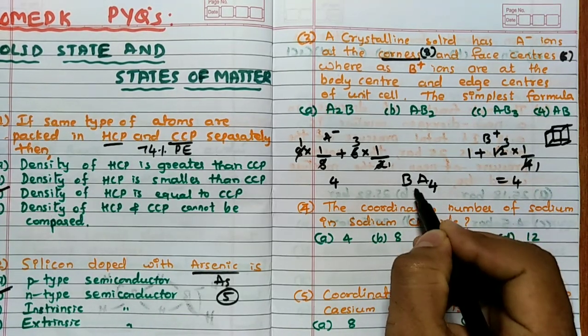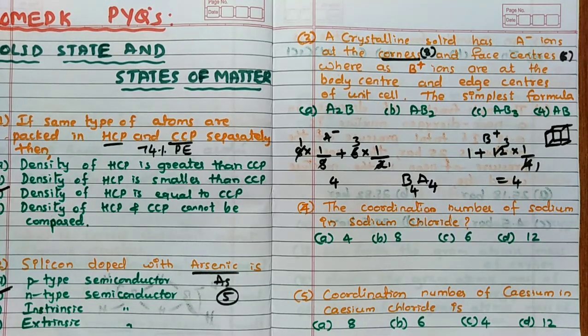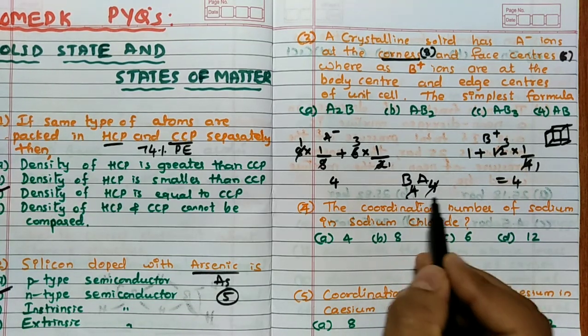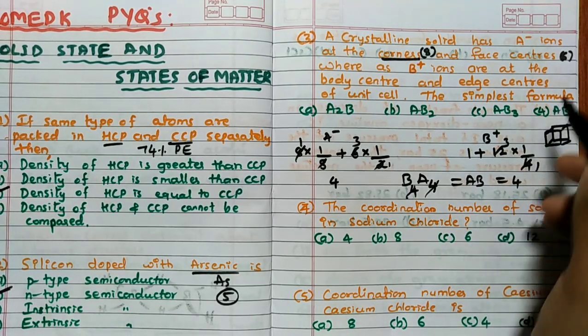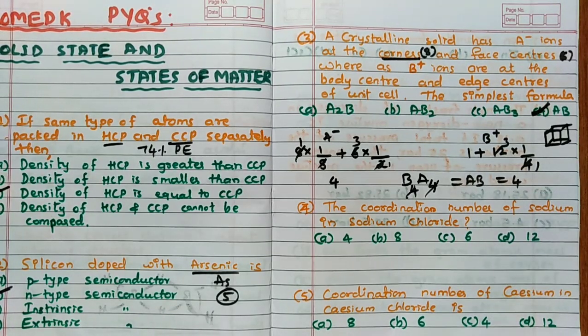Hence I can write B4 A4, or B4 A4, then 4 and 4 cancel. Hence the answer for this is AB. So like this you have to solve, answer is AB.